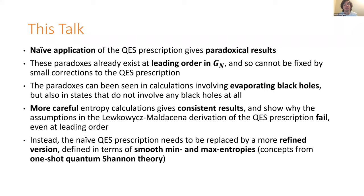Instead, what you find is that the naive quantum extremal surface prescription needs to be replaced by a more refined version involving things called smooth min and max entropies. These are concepts from quantum information — specifically they show up a lot in something called one-shot quantum Shannon theory — and they're really going to play an important role in this talk.